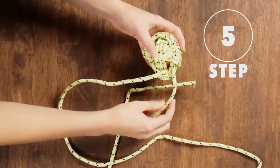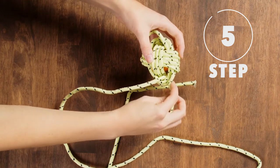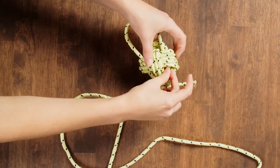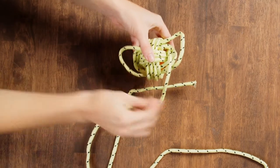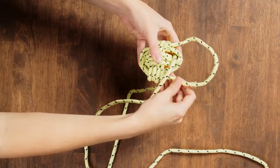Step 5. Find the end of the rope you started with and push it into the center of your rope ball. Be careful not to push it all the way through. It will stay nestled in the middle when you tighten up the ball.